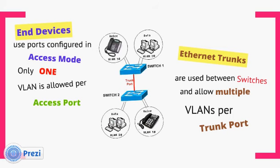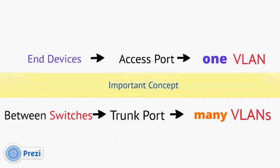Between switches we use something called Ethernet trunks, which allow multiple VLANs per trunk port. An end device is connected to a switch port set in access mode, and that port is assigned to a specific VLAN. Between switches, we want a highway that can run all the VLANs through — that's called a trunk port. So end devices are configured as access ports with one VLAN assigned, while between switches we run a trunk port which allows many VLANs to pass through.